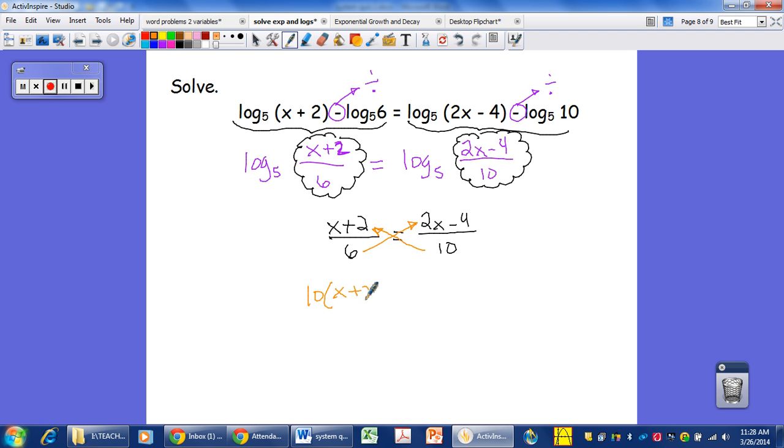So 10 times x plus 2 must equal 6 times 2x minus 4. And then we're going to go about solving this nice equation. So we'll distribute into here, distribute into there. 10x plus 20 equals 12x minus 24. Okay, I'm going to subtract my 10x to this side, 2x. I'm going to add my 24 to that side, 44. And dividing both sides by 2 means that x equals 22.